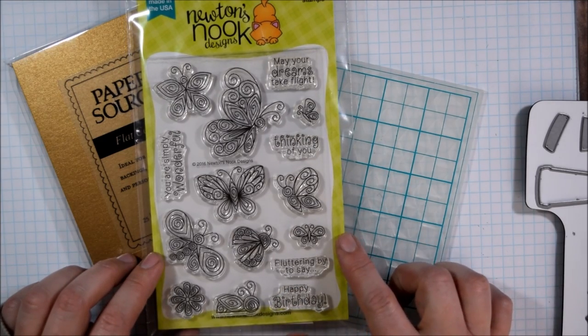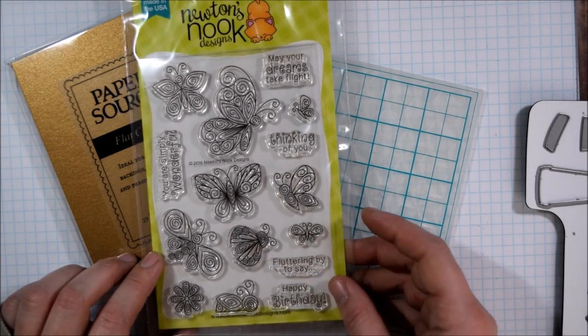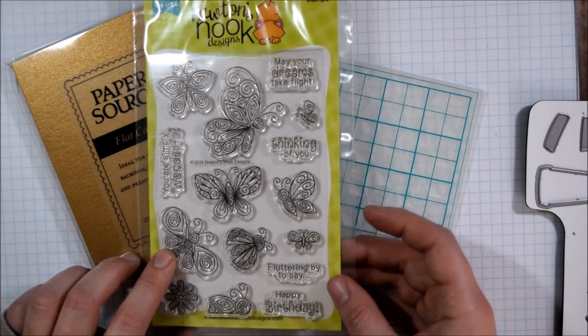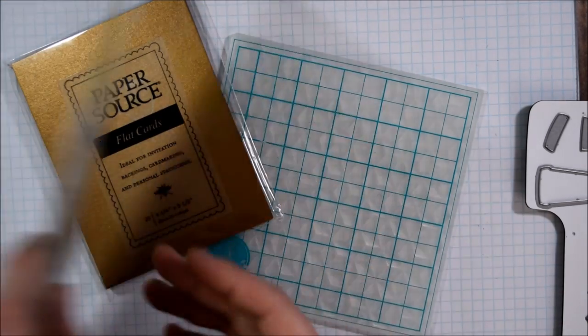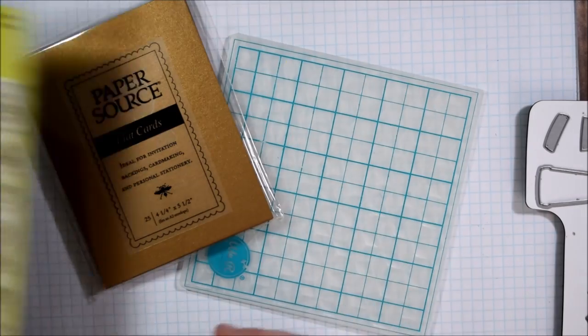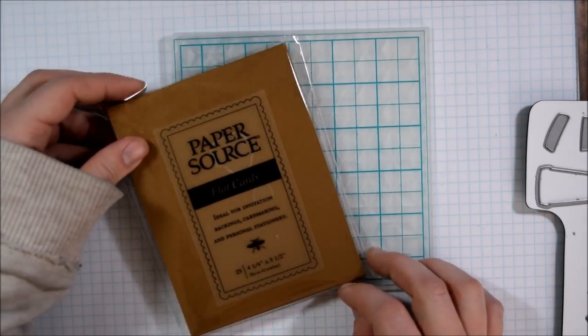So the stamp set that I'm working with today is called Beautiful Wings. This is a follow-up to the Beautiful Blizzard and the Beautiful Blooms stamp sets. It has a similar sort of paper quilled look to it.